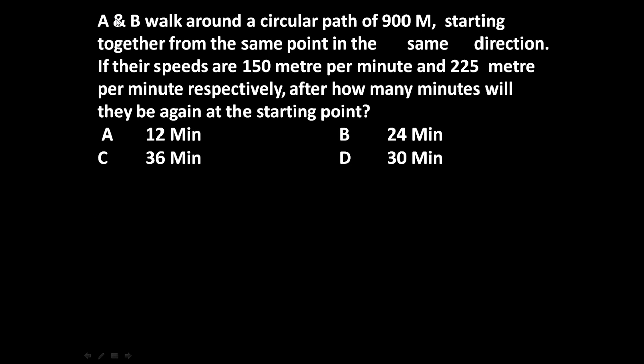Here, the given problem is A and B walk around a circular path of 900 meter, starting together from the same point in the same direction. If their speeds are 150 meter per minute and 225 meters per minute respectively, after how many minutes will they be again at the starting point?